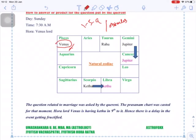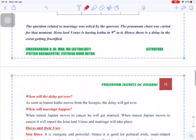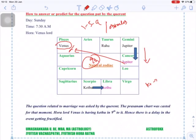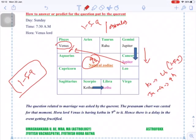He will get married when Jupiter, currently in Gemini, moves to Cancer. Why? Because from Cancer, Jupiter will have its 9th aspect on Venus. So we have two conditions: first, Ketu must move from Scorpio to Libra so there is no 1-5-9 connection to Venus; and second, Jupiter must move from Gemini to Cancer so it has its powerful 9th aspect to Venus in Pisces. As I said, 1-5-9 are very powerful aspects in Nadi astrology.